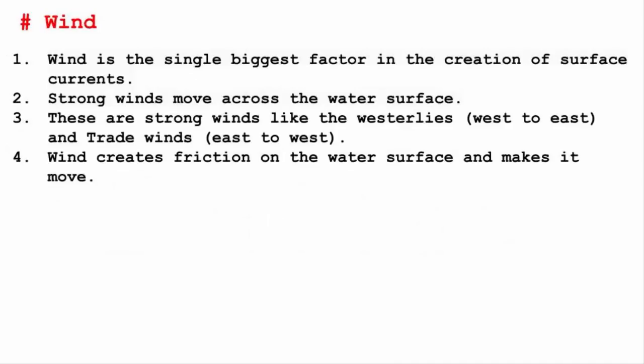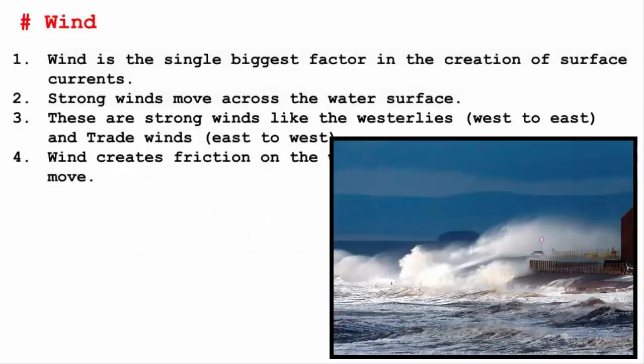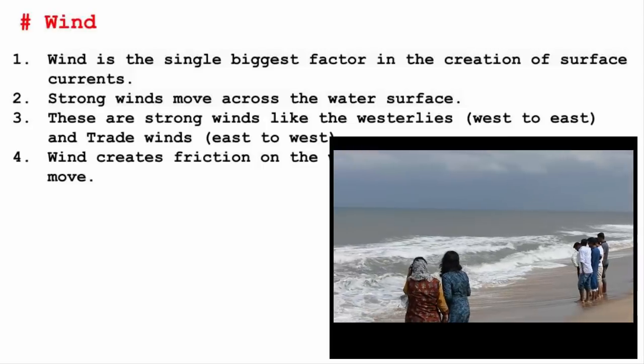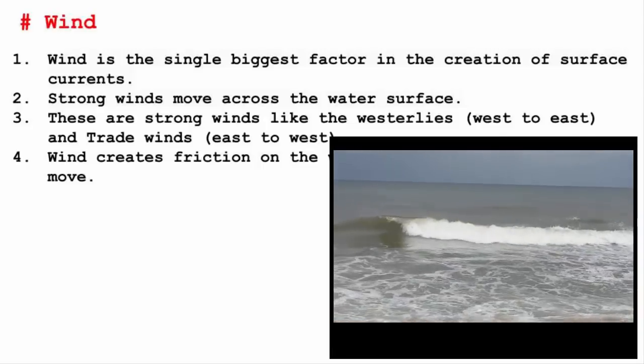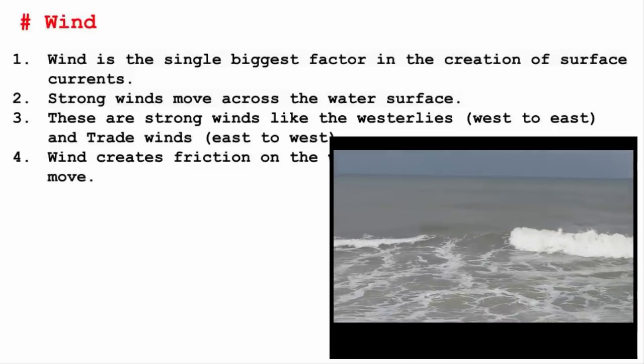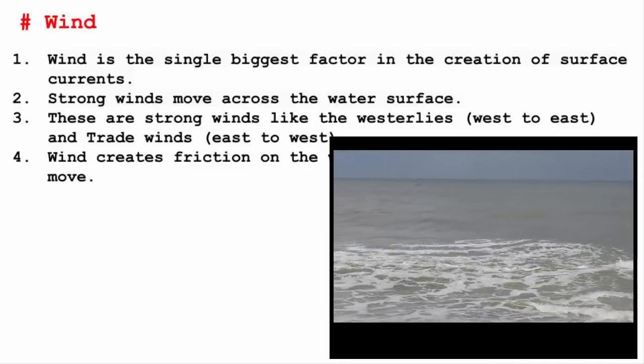The third factor is wind. Wind is the single biggest factor in the creation of surface currents. You must have witnessed this when you stand at a coastal region facing the sea. You will find strong winds moving across the water surface, which apparently moves the surface of the water as well.